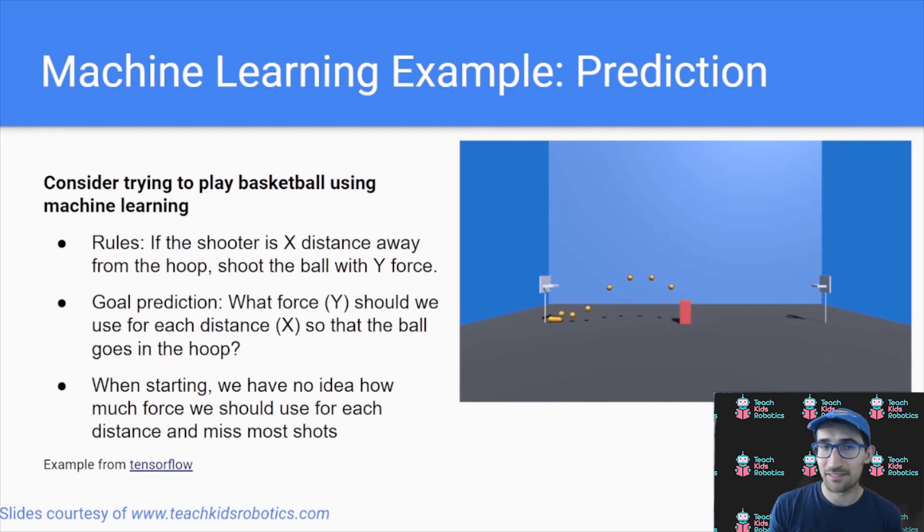You're here to gather data or you have data available to you. The rule is simple. You shoot the ball a given distance x from the hoop, and you shoot it with a given force y. So what we're trying to predict is what force y should we use for each distance x so that the ball goes into the hoop no matter where we're attempting to take the shot from.